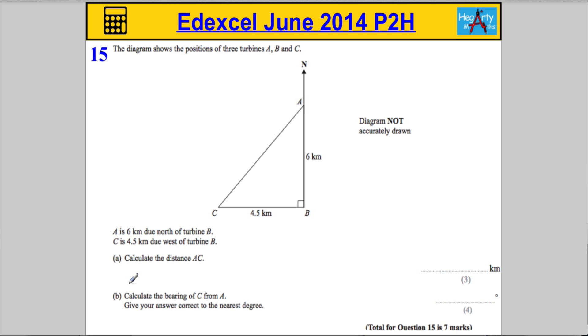So, AC. AC squared must equal 4.5 squared plus 6 squared. OK, this AC is the longest side, so the longest side squared must equal the sum of the two other sides squared.